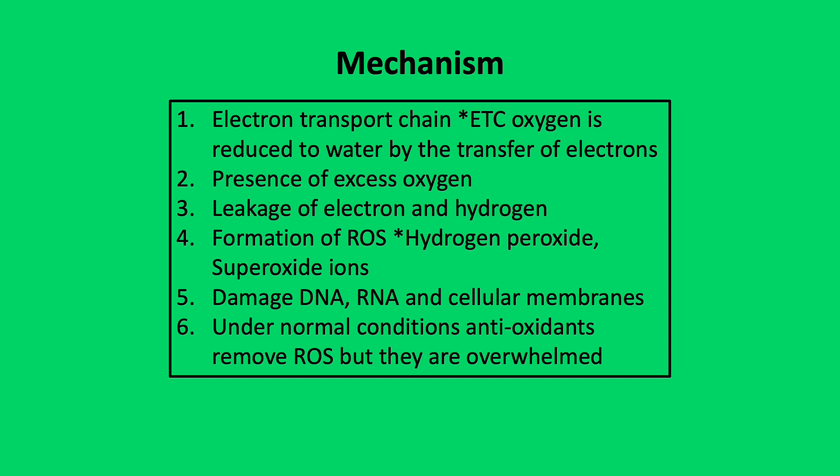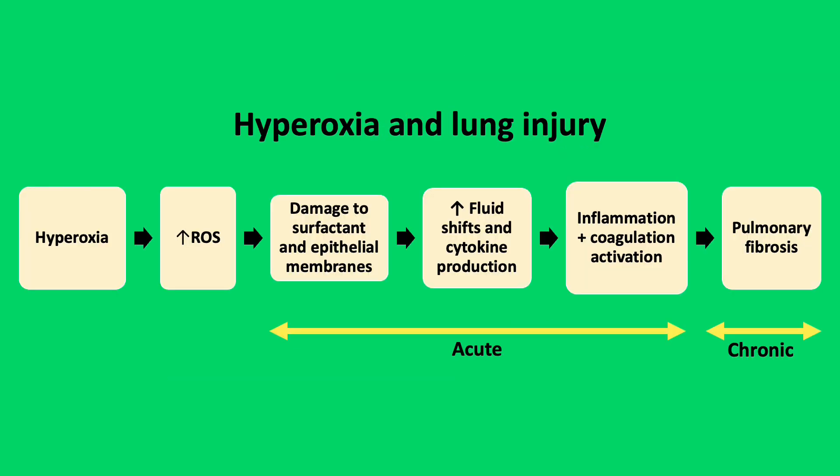Under normal conditions, antioxidants remove reactive oxygen species, but in these conditions they are overwhelmed. Hyperoxia can lead to direct lung injury due to increased production of reactive oxygen species, causing damage to epithelial membrane surfaces and surfactant. This causes abnormal fluid shifts and cytokine production, leading to the activation of inflammation and the coagulation cascade and thus forming thrombin. Persistent inflammation can lead to pulmonary fibrosis, which is a chronic irreversible state.